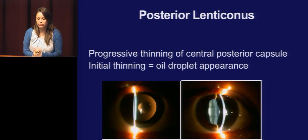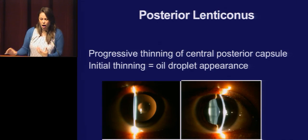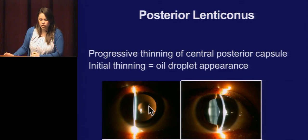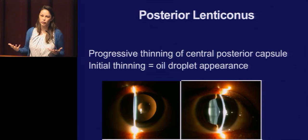Posterior lenticonus involves progressive thinning of the central posterior capsule. Basically the posterior capsule has a congenital defect — it's weaker and protrudes. On transillumination you see a round area that looks like an oil droplet. On your boards or O-caps, this is what they'll call an oil droplet cataract.